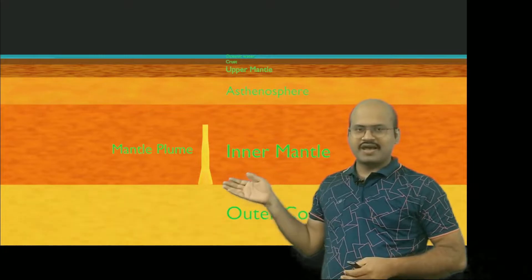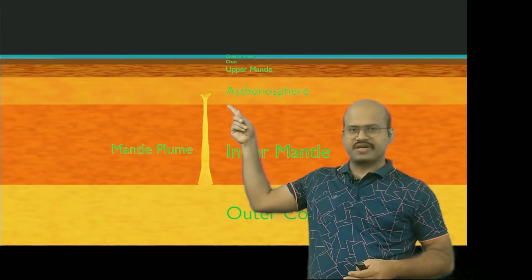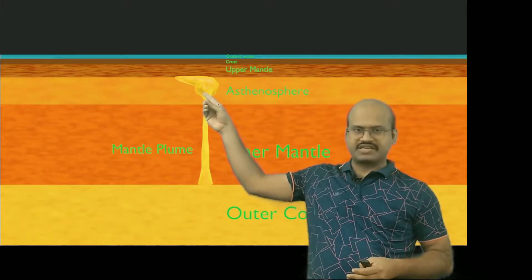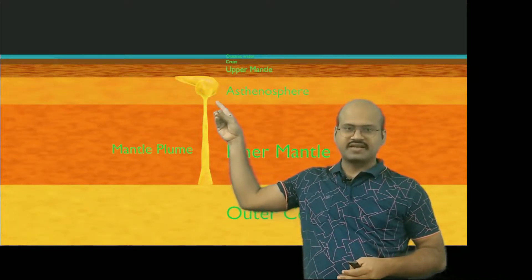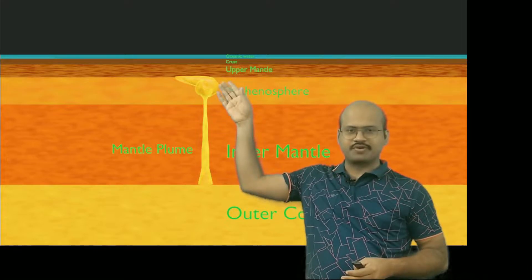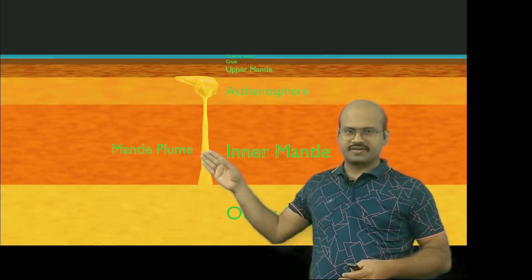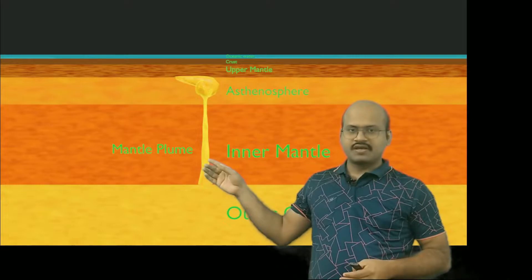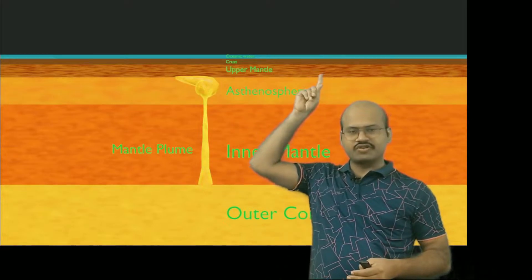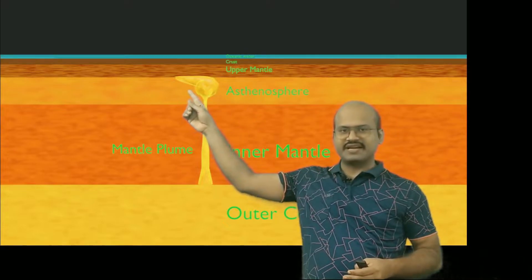A hotspot is created by a mantle plume which rises from the deeper parts of the inner mantle, travels through the inner mantle, comes to the asthenosphere, and accumulates below our lithosphere. The reason it accumulates here is that its density is much higher compared to the lithosphere, because it comes from the deeper parts of our Earth.